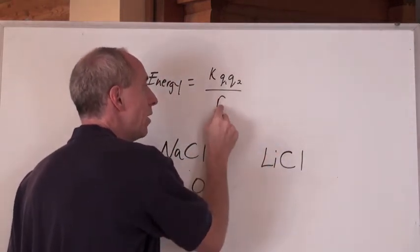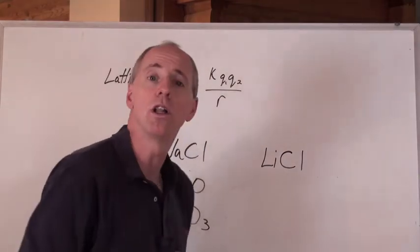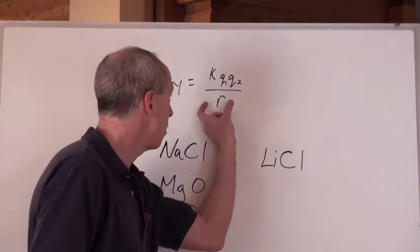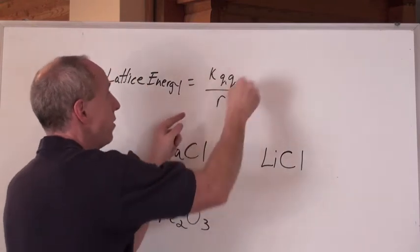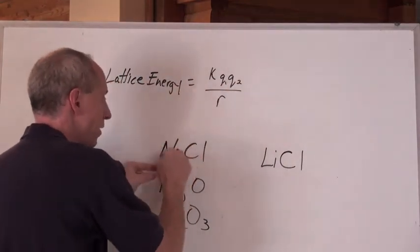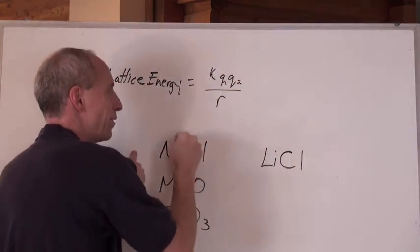A smaller number here makes this value larger because it's in the denominator, smaller denominator. If the denominator was larger, it would make this number small. And this one's going to have a larger, so it's going to be smaller.